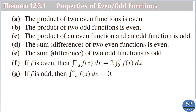We can now discuss some important properties of even and odd functions. First, the product of two even functions is even. Second, the product of two odd functions is an even function. For example, x² times x² gives x⁶, which is an even function. And the product of two odd functions: x times x gives x², which is even.